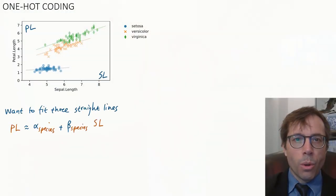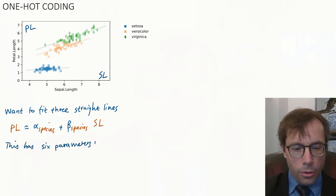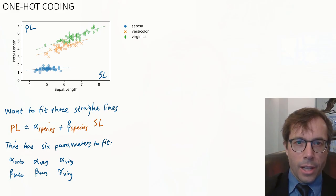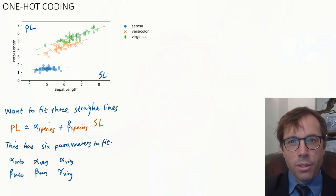Okay, so we want to fit three straight lines, one for each species. Let's write this as petal length is approximately alpha subscript species plus beta subscript species times sepal length. Or I'll abbreviate, let PL be the petal length and SL be the sepal length. The point of this is there's an alpha coefficient, the intercept term, and a beta coefficient, the slope term, for each species. In other words, there are six parameters we're trying to fit. Alpha setosa, beta setosa for the setosa species, alpha versicolor, beta versicolor for the versicolor species, and alpha virginica, beta virginica for the virginica species.